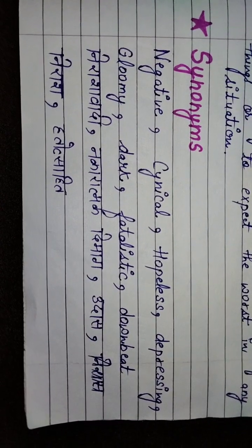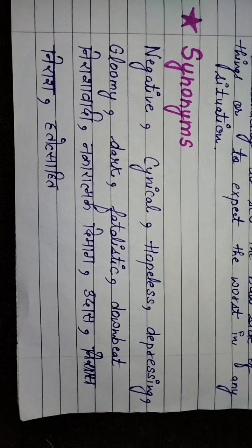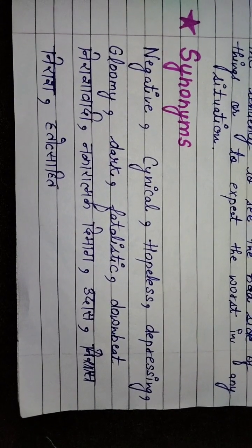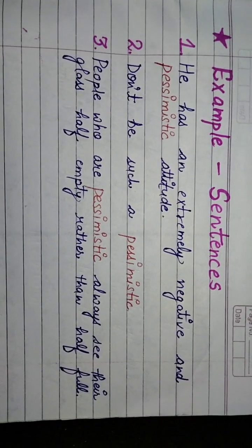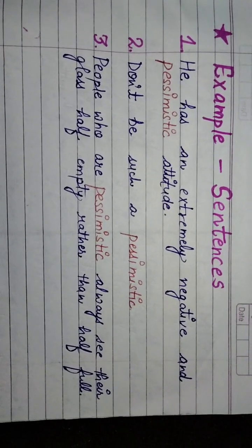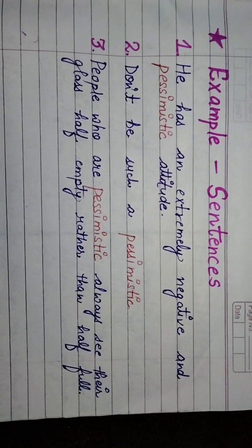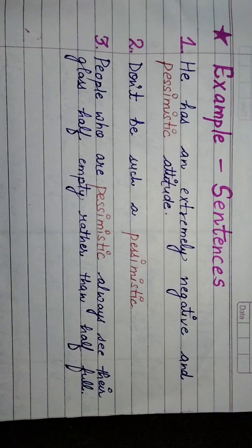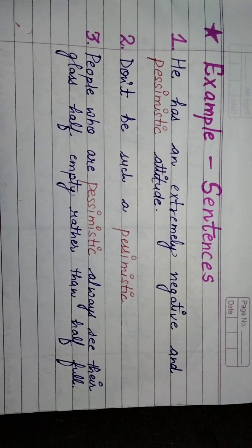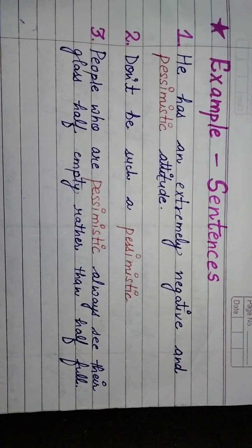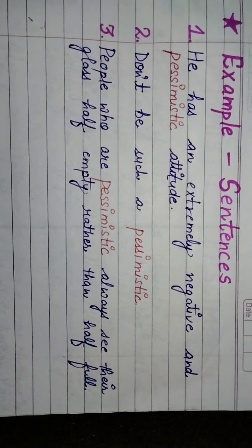Pessimistic के हिंदी meanings हैं: निराशावादी, नकारात्मक दिमाग, उदास, निराश, और हतोत्साहित. Pessimistic के example sentences देख लेते हैं. First sentence: 'He has an extremely negative and pessimistic attitude.' इस sentence में बताया गया है कि उस person का attitude extremely negative और pessimistic है — यानि वो बहुत ही ज़्यादा नकारात्मक सोचता है.